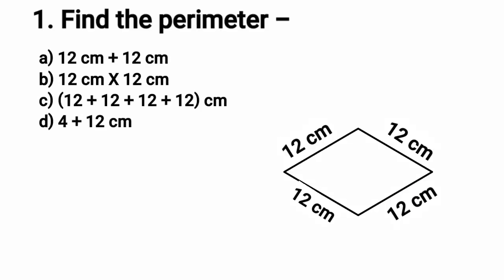Here is the first question. Find the perimeter. The 4 options given are: Option A is 12 cm plus 12 cm, Option B is 12 cm multiplied by 12 cm, Option C is 12 plus 12 plus 12 plus 12 cm, and Option D is 4 plus 12 cm.